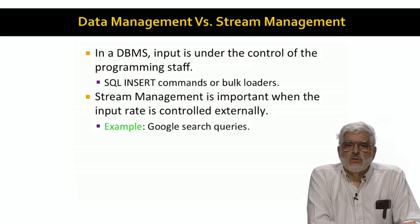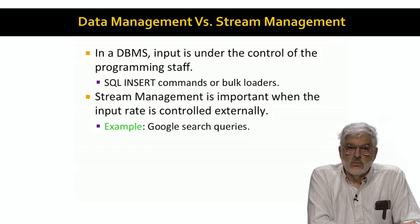In a streaming environment, the management cannot control the rate of input. For example, the search queries that arrive at Google are generated by random people around the world at their pace. Google staff have no control over the arrival of queries. They have to architect their system to deal with whatever data rate there is.